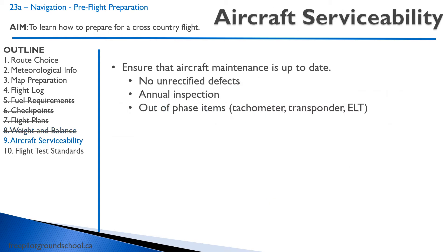With regard to aircraft serviceability, you're going to look at your journey logbook and ensure that aircraft maintenance is up to date. Look at when the last 50-hour inspection was — that's the easiest one to check. Make sure you're not past those 50 hours. There are also out-of-phase items you can find in CAR 625 Appendix C, or ask your director of maintenance for the approved maintenance schedule.